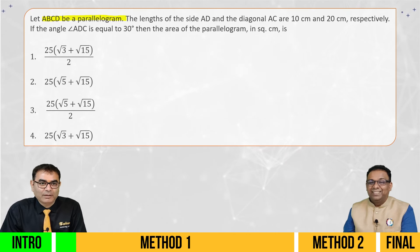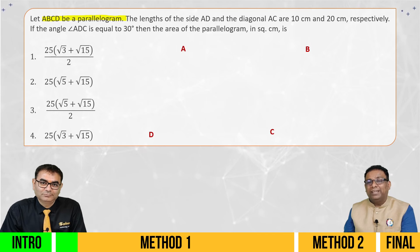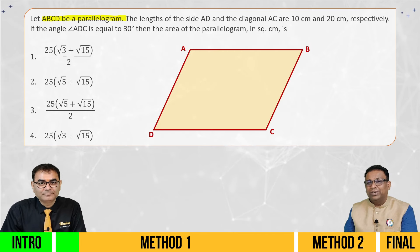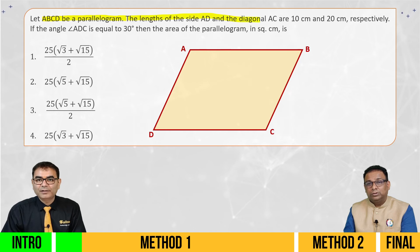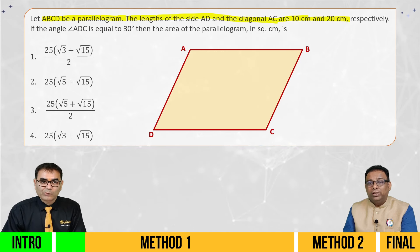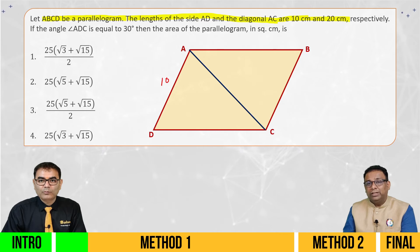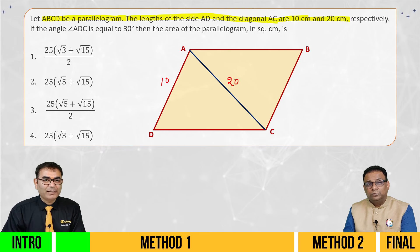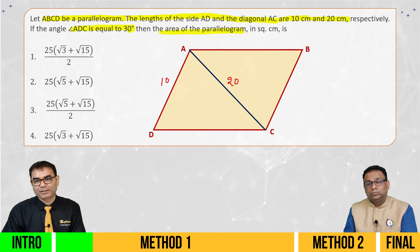We will make a circle. That's right. So I have a point A, B, C, D — and this is a parallelogram. Very beautiful. So the length of side AD and diagonal AC are 10 cm and 20 cm. So I will write AD and diagonal AC. The question is, if the angle ADC is equal to 30 degrees, then the area of the parallelogram is equal to?